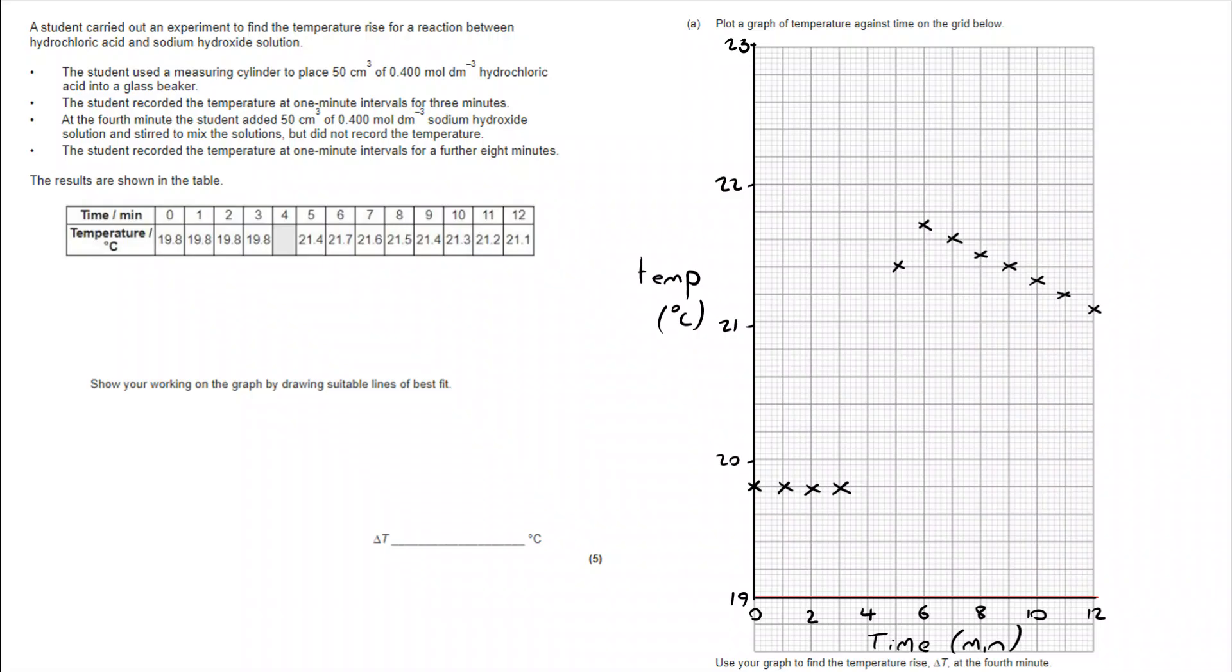Now, once I've done this, I can extrapolate my two lines. Extrapolating the bottom line shows me what would have happened if I hadn't added the reactant at four minutes. According to the trend we see here, it would have stayed at 19.8. When I extrapolate back on the top line, I am going to ignore this particular cross. That's because the temperature is still going up.